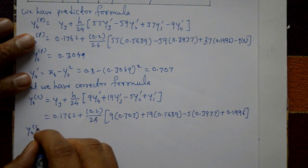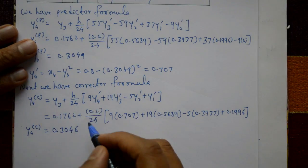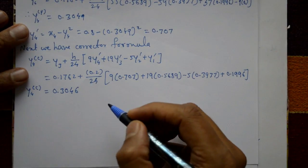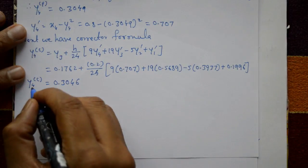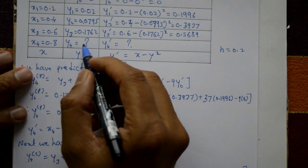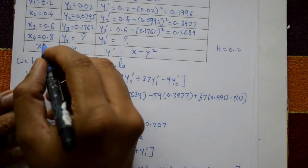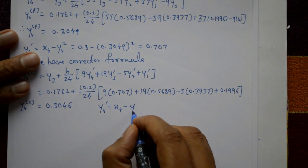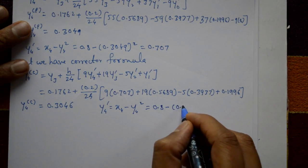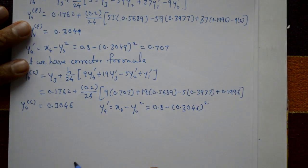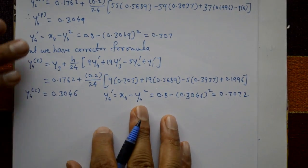From the first corrector iteration we get y₄ᶜ = 0.3046. The corrector formula must be repeated until the last two iterations give the same value. We now find the updated y'₄ = 0.8 − (0.3046)² = 0.7072.